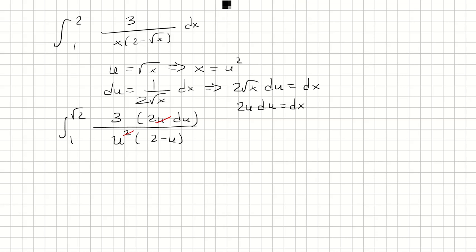And I can factor out, this is 3 and 2, that's 6. Pull that out. Integral from 1 to square root of 2, 1 over u times 2 minus u du.